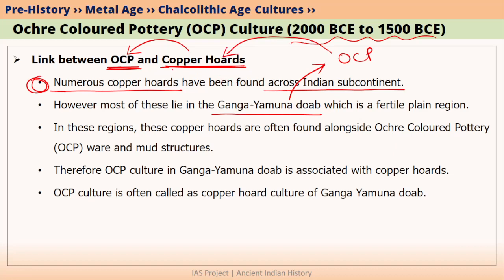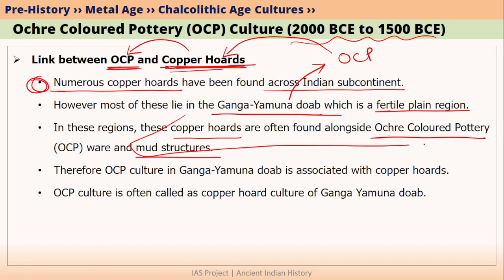Chalcolithic people generally did not prefer to live in fertile river plains — they preferred to live in slopes of hills as well as river valleys. However, these copper hoards of OCP culture were found in fertile river regions. That is why we believe they were not buried by other Chalcolithic people. In the Ganga Yamuna Doab region, we found these copper hoards along with ochre coloured pottery and mud structures, and that is why we tried to link all these things with OCP culture people.